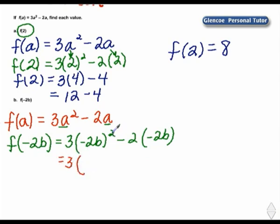The square of negative 2b is a positive 4b squared. Negative 2 times negative 2b will have a plus 4b.